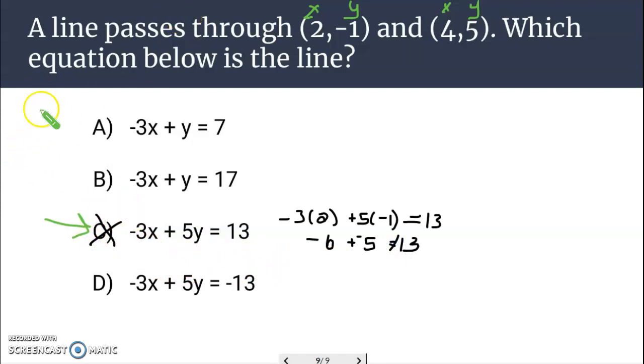Let's next give A a try. Let's see if A works. Alright. We'll try the first point. Negative 3 times 2 plus negative 1. Does that equal 7? See, negative 3 times 2 is negative 6. And negative 1, does that equal 7? Nope, that seems to equal positive 7. So A doesn't work.